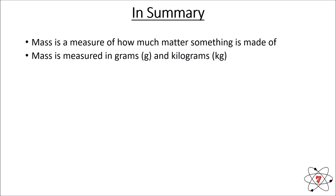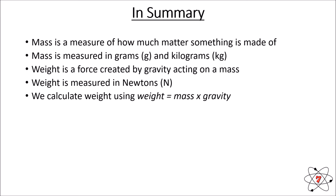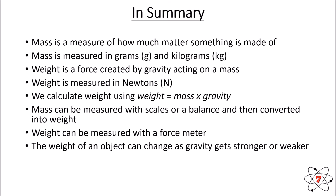In summary: mass is a measure of how much matter something is made up of, measured in grams or kilograms. Weight is a force created by gravity acting upon any object with mass, measured in newtons. We calculate weight using W = mg. Mass can be measured with scales or a balance and converted to weight by multiplying by g, or weight can be measured directly with a force meter. The weight of an object changes as gravity gets stronger or weaker, but mass is constant. Until next lesson, keep on learning!